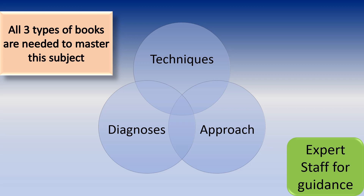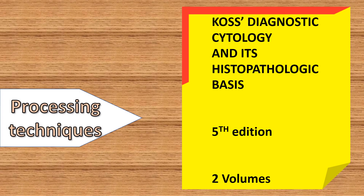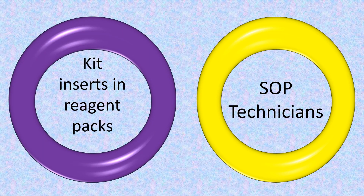An icing on the cake is having experienced staff to guide you on FNAC techniques. For sample processing techniques, I suggest Koss' Diagnostic Cytology and its Histopathologic Basis. It has a purple cover and comes in two volumes. I suggest you open these books and read them if you find them good. The reading material should be compatible with you. Also inquire at the medical bookstore if new volumes will come in future. The textbook procedure generally differs from what is being followed in your laboratory, so your life savers are kit inserts in the reagent packs and also the standard operating procedures in your laboratory.